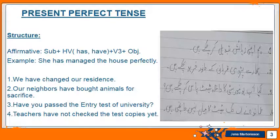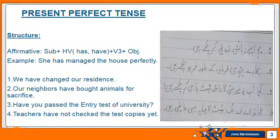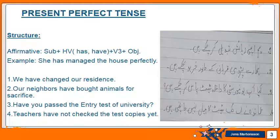Now look at the structure. To make an affirmative sentence, we use subject plus helping verb. 'Has' and 'have' are used — for third person singular (he, she), 'has' is used, and for I, you, we, they, 'have' is used. Throughout all the perfect tenses, the third form of the verb will be used, and then the object will be added. See the example: 'She has managed the house perfectly.'